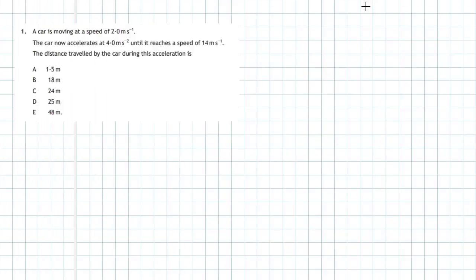2018 section 1 question 1. A car is moving at a speed of 2 meters per second. The car now accelerates at 4 meters per second every second until it reaches a speed of 14 meters per second. The distance traveled by the car during this acceleration is — and you're given the usual five choices.